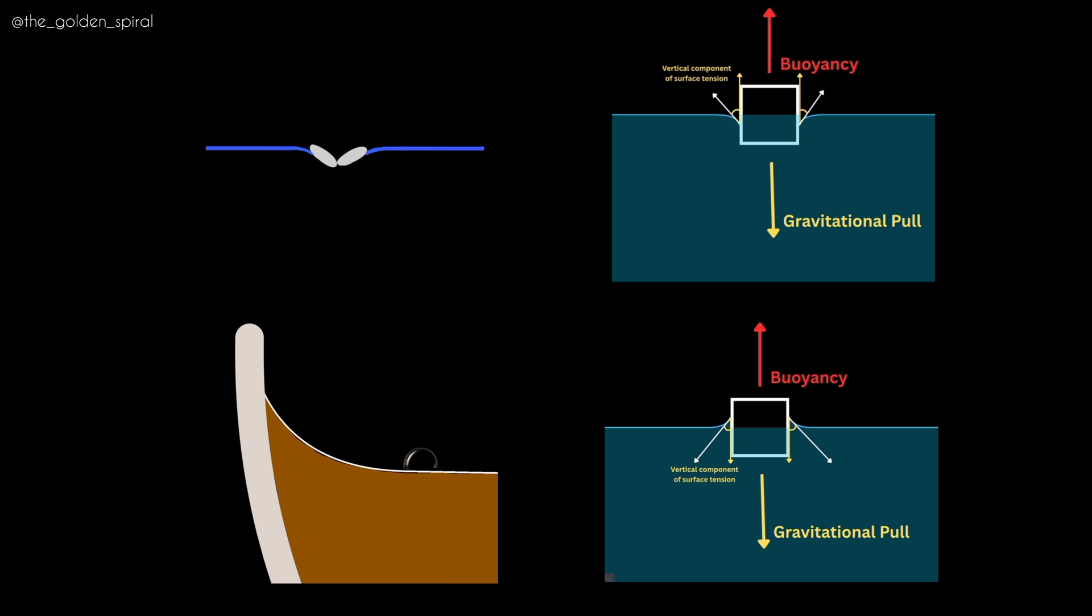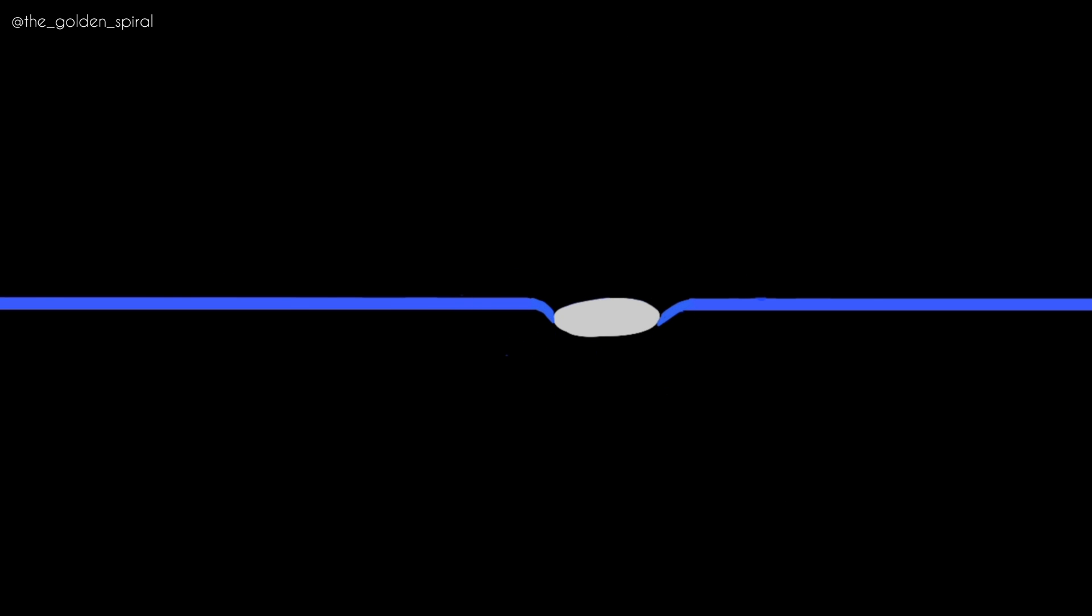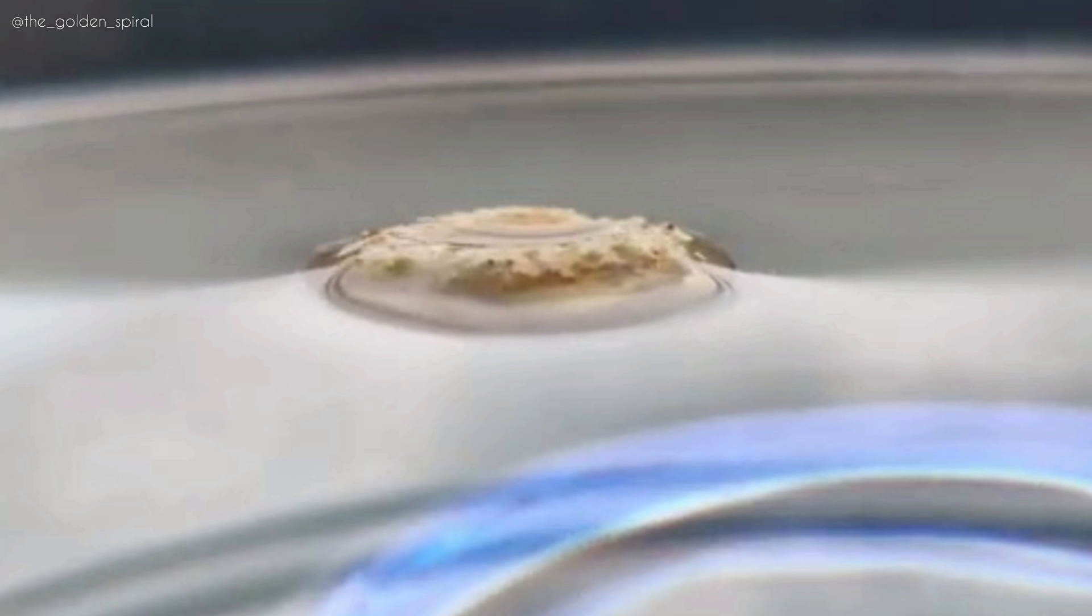Whatever I have told you till now is all in terms of meniscus, which is a fundamental property that depends upon the interacting object and the fluid. But attraction and repulsion of objects does not entirely depend upon the shape of meniscus that naturally occurs. This shape of meniscus can be altered in some ways.